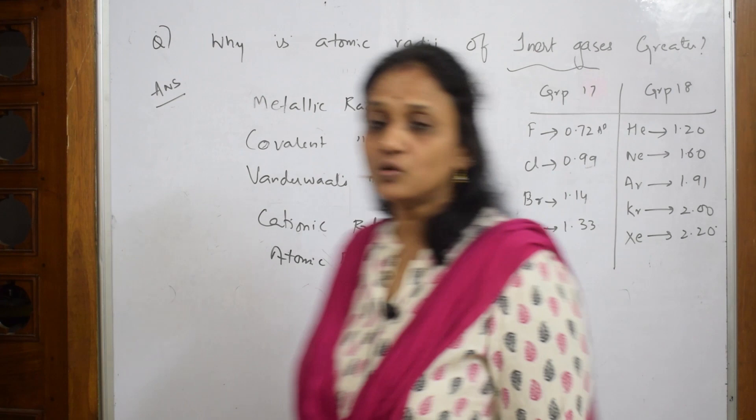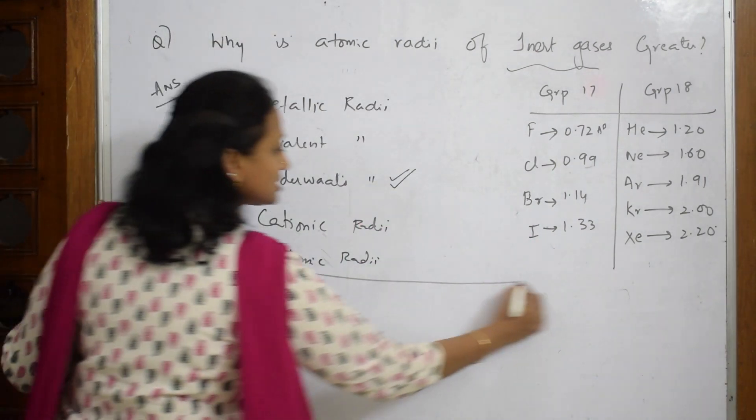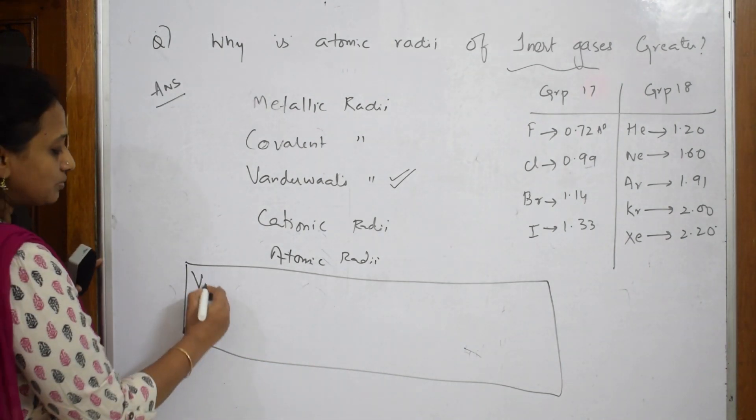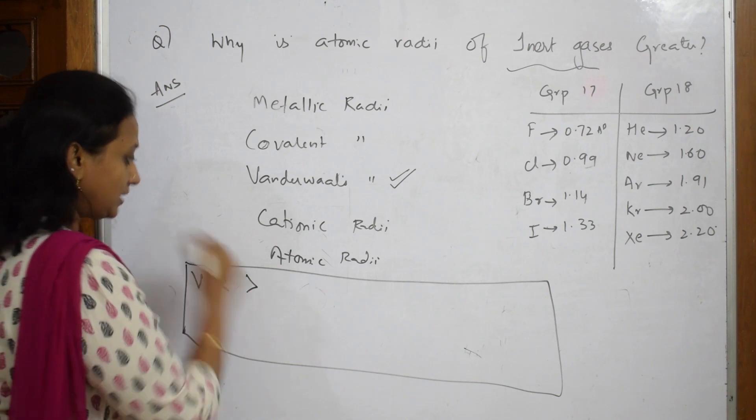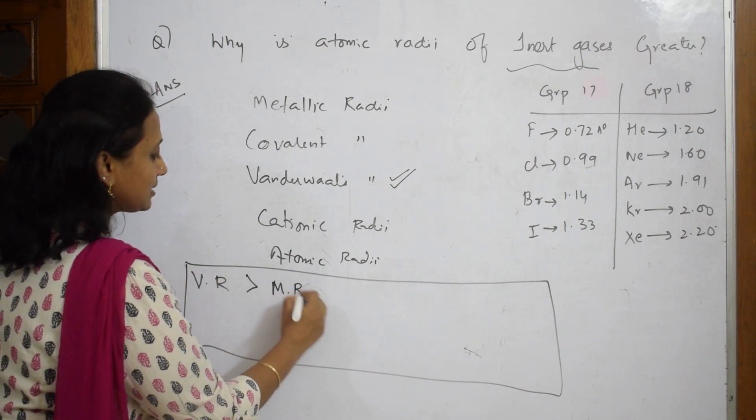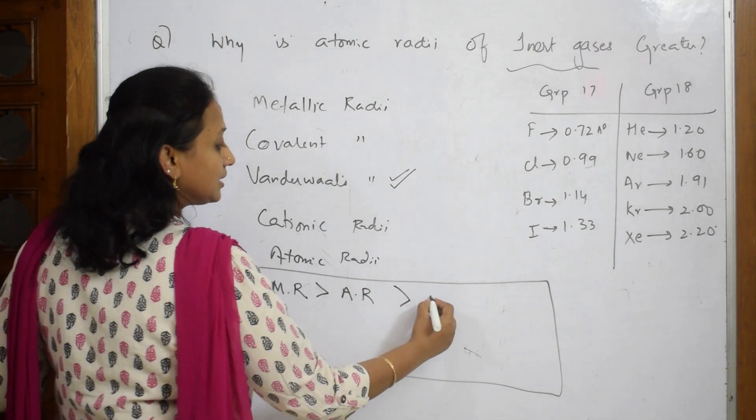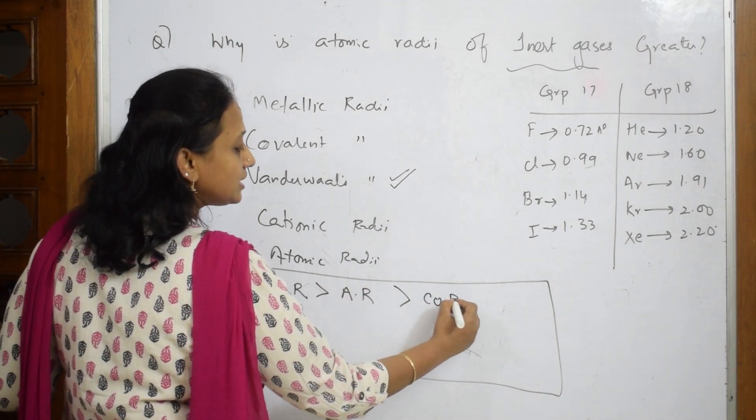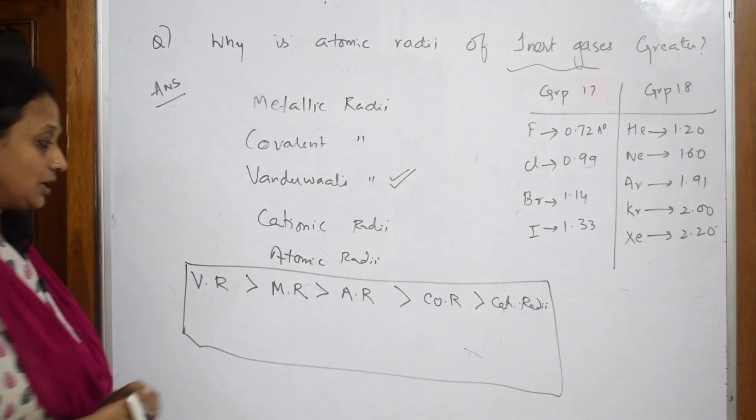What is the sequence? Always remember: van der Waals radius is greater than metallic radius, greater than atomic radius, greater than covalent radius, greater than cationic radius. This is the sequence.